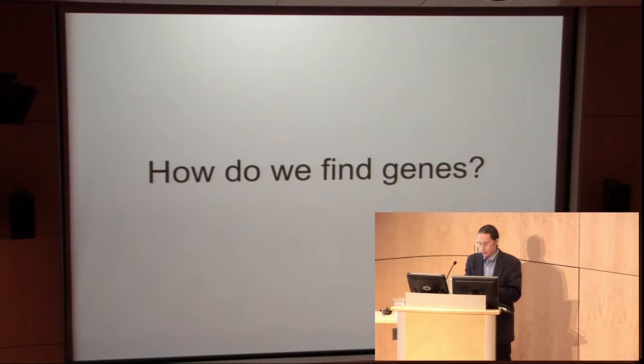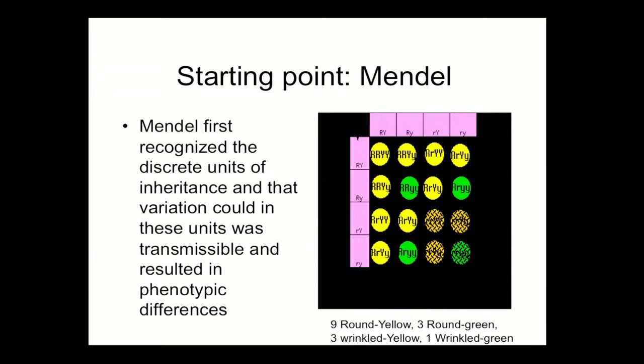Another example where genetics has started over the last decade to influence our thoughts about human medically relevant phenotypes is in the dosage of drugs — for example, warfarin, the most common anticoagulant, also known as coumadin. Its effectiveness and safety are really critically dependent on dosage. Too much puts you at risk of over-anticoagulation or hemorrhage, and too little is not effective at all. However, there's widespread variation in individual dosage.